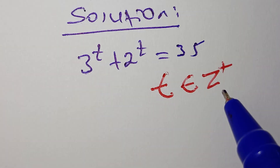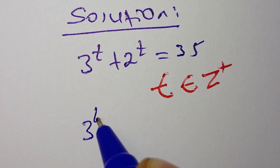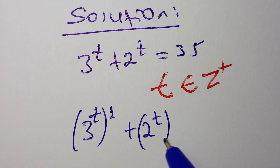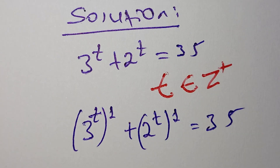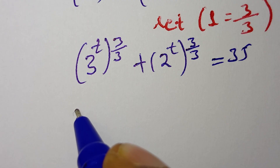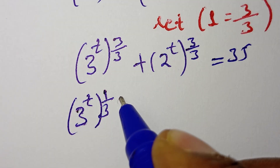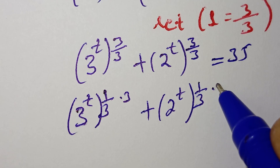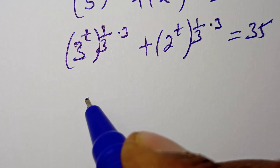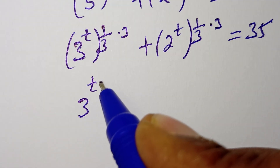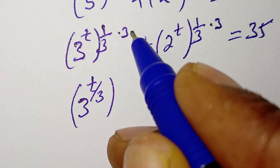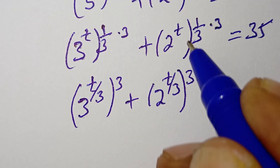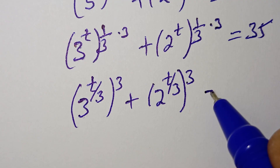If t is an element of Z-plus, 3 to the power of t times 3 to the power of 1, plus 2 to the power of t times 2 to the power of 1, which is equal to 35. Then 1 over 3 times 3 to the power of t times 3, plus 1 over 3 times 2 to the power of t times 3, is equal to 35. We get 3 to the power of t over 3, cubed, plus 2 to the power of t over 3, cubed, equals 35.